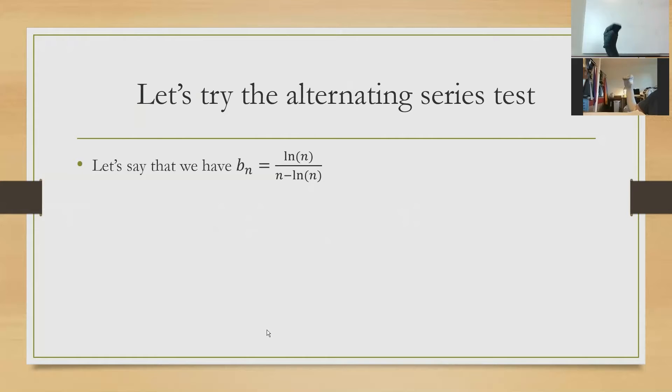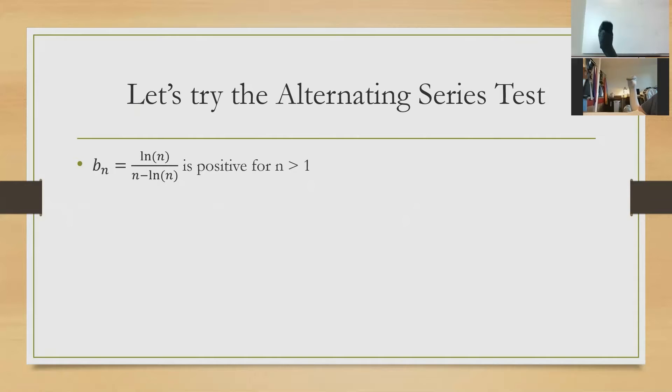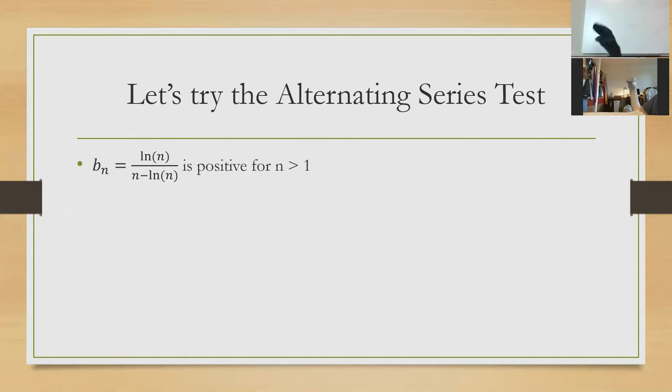Let's say that b sub n equals natural log of n over n minus natural log of n. We have a checklist for the alternating series test: it has to be positive, decreasing, and continuous. We know b sub n is going to be positive for all n greater than 1. It can't be 1 because that would be 0 over 1, which is 0 — not positive. And the natural log of 0 doesn't exist. So it's going to be positive in the numerator and positive in the denominator.